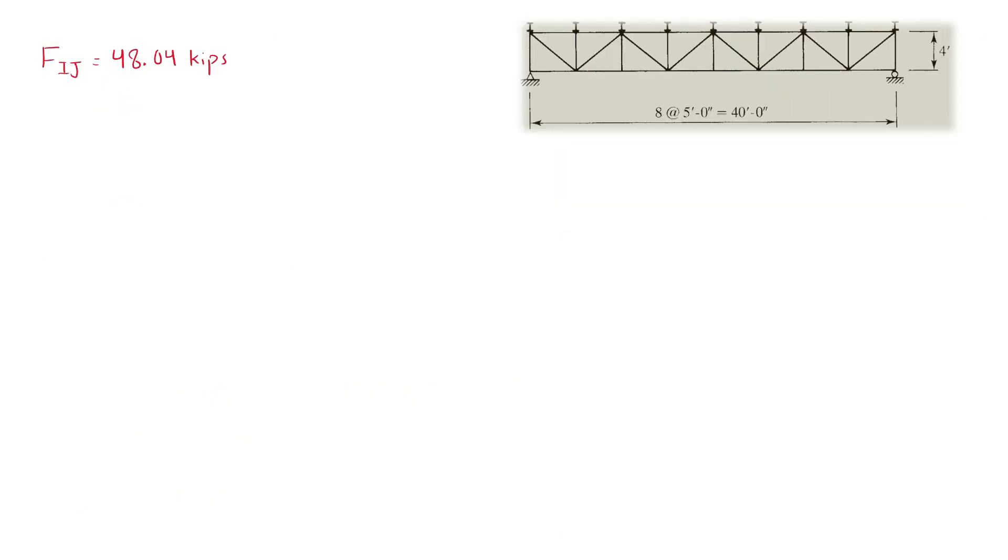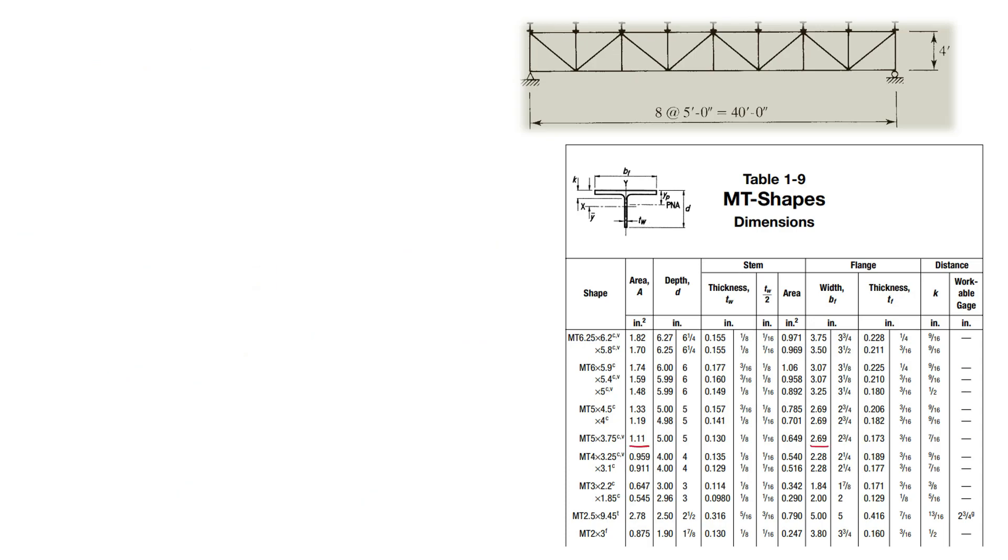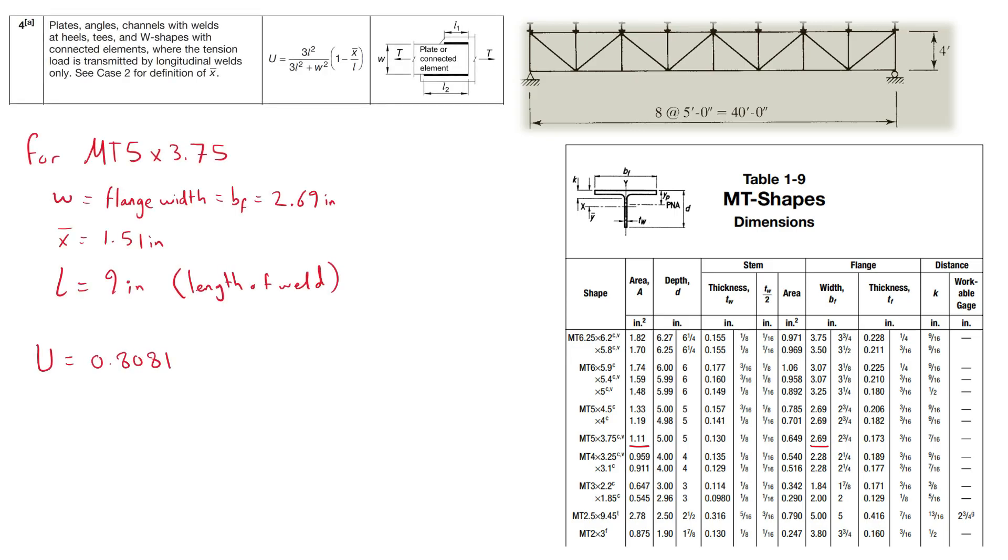We determine then the minimum gross and effective areas required. We then refer to table 1-9 of the AISC manual to pick the structural T with a size slightly greater than the gross area required, and thus we choose MT5 by 3.75. Since this is a connection with longitudinal welds only, the shear lag factor U is 0.808. This gives us an effective area of 0.897 which is less than the required effective area of 0.985.